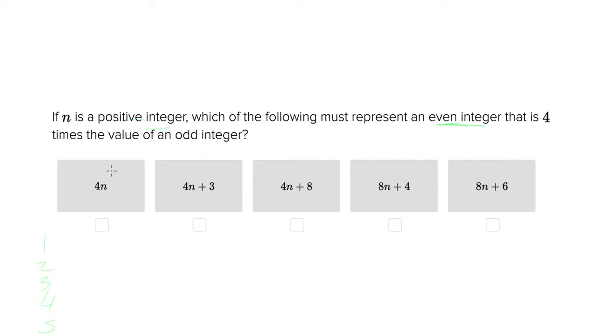So if you were to plug in one, for example, you'd have four here, which is even, but if you plugged in one here, you would have four plus three, which is odd. And you see that four is an even number and three is an odd number. When you add an even plus an odd, you always get an odd. Each of these has an even value that you're adding to the four n or eight n. So each of these also satisfies that the response will be even.